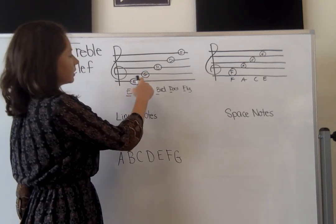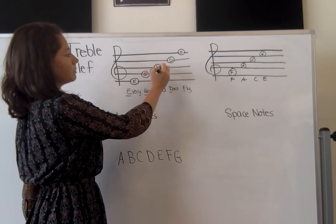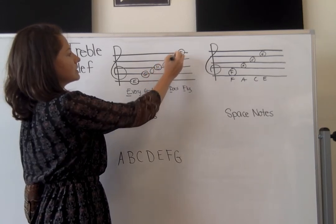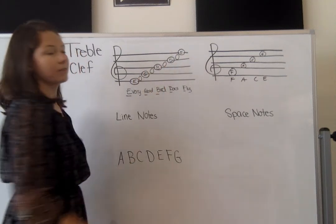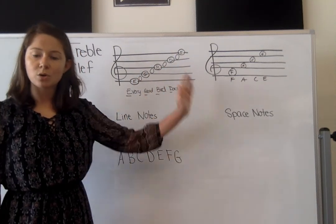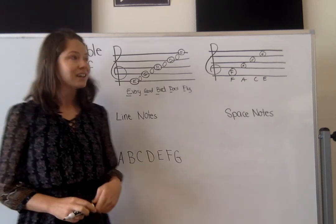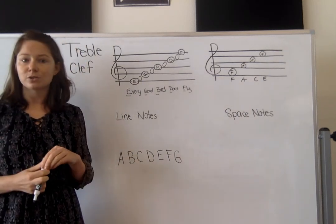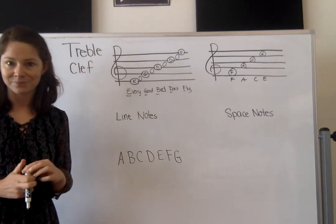F, G, and you could have A here, B, C here, D, E here, and F all the way at the top. They just go in alphabetical order. And that is how you read your space notes and your line notes on the treble clef.